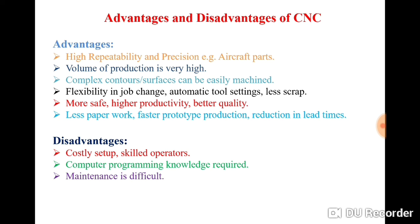Another advantage is less scrap. CNC machines produce very little scrap because everything — speed, feed, depth of cut, and dimensions — is defined before manufacturing. In a conventional machine the operator decides the speed, feed, and depth of cut, so the operator may commit mistakes while machining the object.